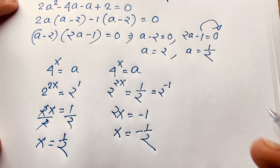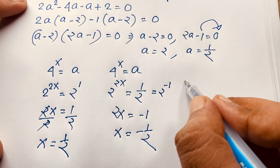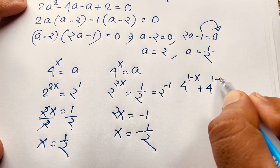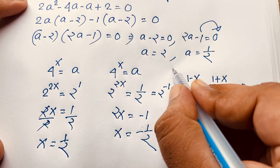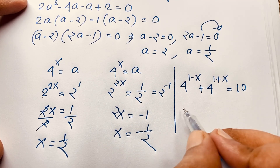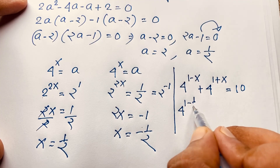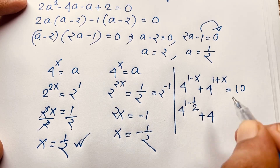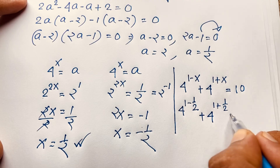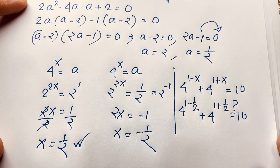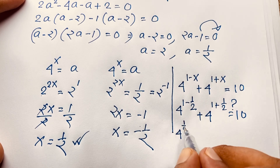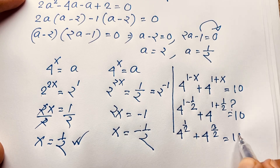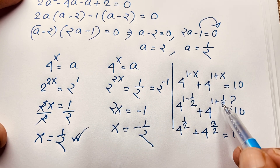Let's verify our answer in the original equation: 4 to the power (1 minus x) plus 4 to the power (1 plus x) equals 10. For x equals 1/2: 4 to the power (1 minus 1/2) plus 4 to the power (1 plus 1/2) equals 4 to the power 1/2 plus 4 to the power 3/2 equals 10.